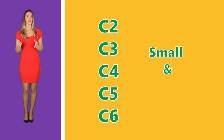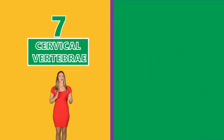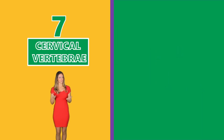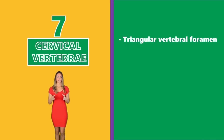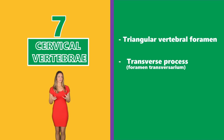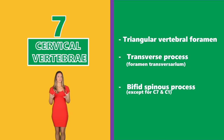C2 and C6 are small and oval in shape. All seven cervical vertebrae have the following distinct features: a triangular vertebral foramen, a transverse process foramen transversarium, and a bifid spinous process — although exceptions to these are C7 and C1.